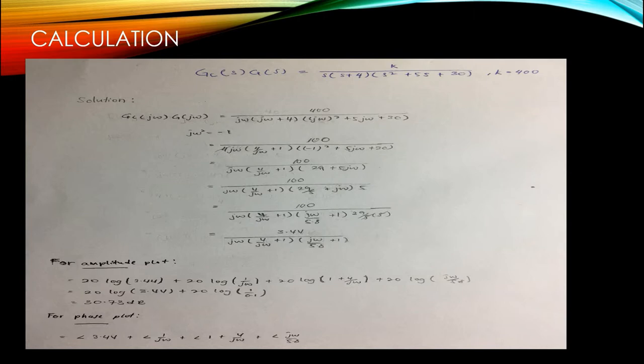This is for the amplitude plot that we calculated. We got 30.73 dB for the first margin that we get. This is the full phase plot.